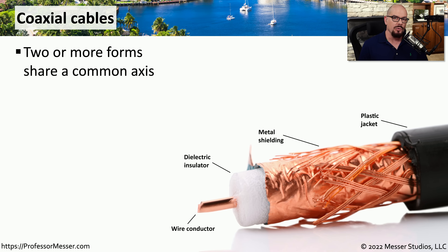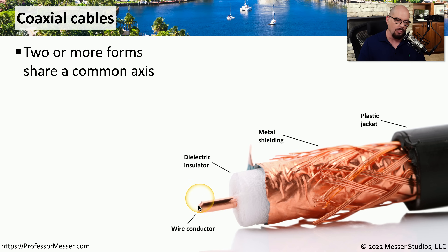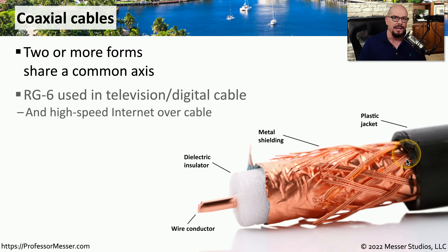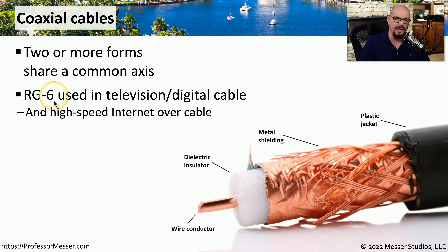Another type of cable we commonly use, especially on cable modem networks, is coaxial cable. Coaxial means two or more forms share a common axis. There is a single wire conductor running the length of the cable, surrounded by an insulator, then metal shielding, then a plastic jacket on the outside. This is the type of cable commonly used inside your home for cable television or a cable modem, and it typically uses RG6 as the coax type.